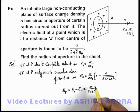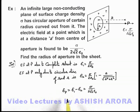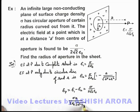We substitute the values of E1 and E2 over here. You can see that E1 minus E2 will result sigma 'a' divided by 2 epsilon not root of a square plus r square is equal to sigma by 2 root 2 epsilon not. Here sigma and epsilon not gets cancelled out.